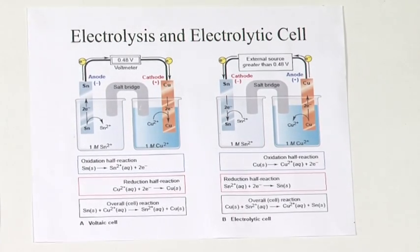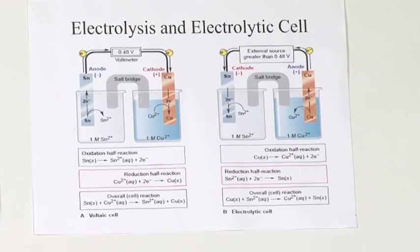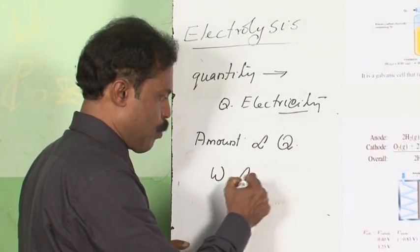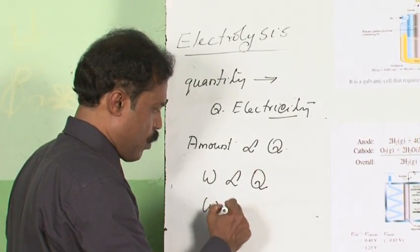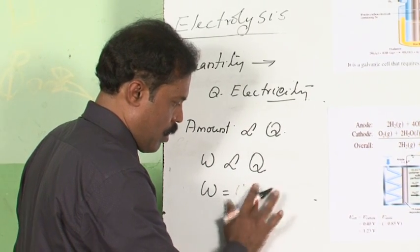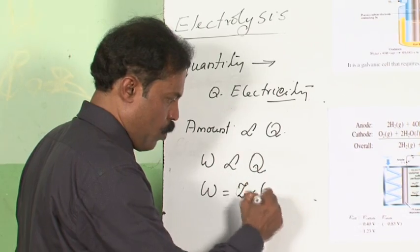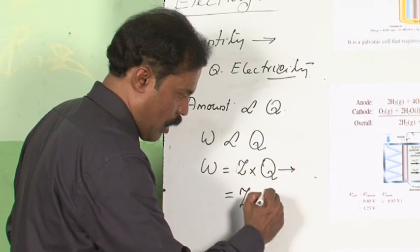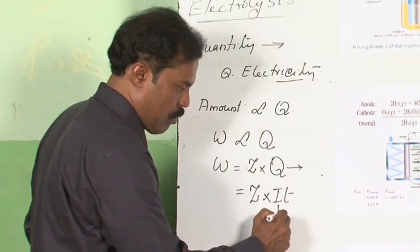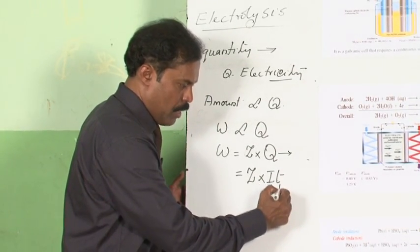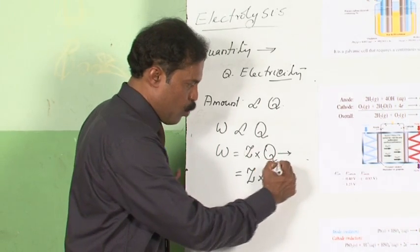We can say the amount deposited W is proportional to Q, or W equals a constant Z times Q. Q represents electricity, which can be written as I times T, where I is current in amperes and T is time in seconds, so Q is in coulombs.